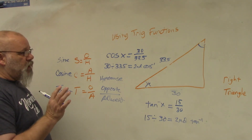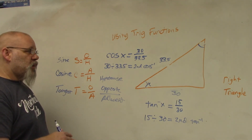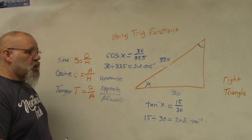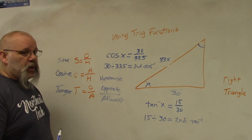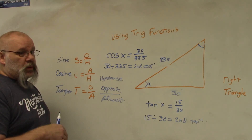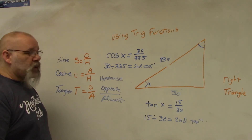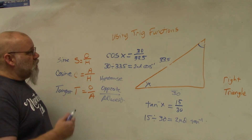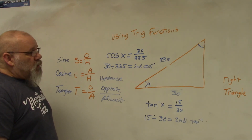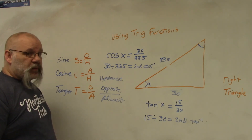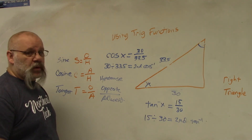So using these three formulas, you can find the angles of a right triangle and the sides of a right triangle. As long as you have two values, you can find the third — you can find any of the ones you're missing. That's using trig functions for estimating in construction math.